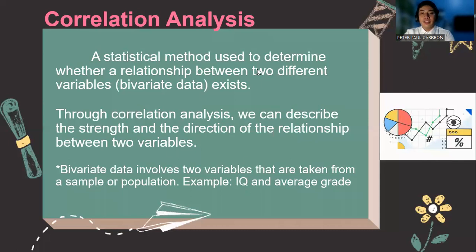Say for example, when we talk about IQ and average grade, these are two bivariate data that are taken from a sample or population. If you are interested in how IQ affects the average grade or vice versa, meaning we are establishing a relationship between these two bivariate data, then you will be using correlation to describe those relationships.